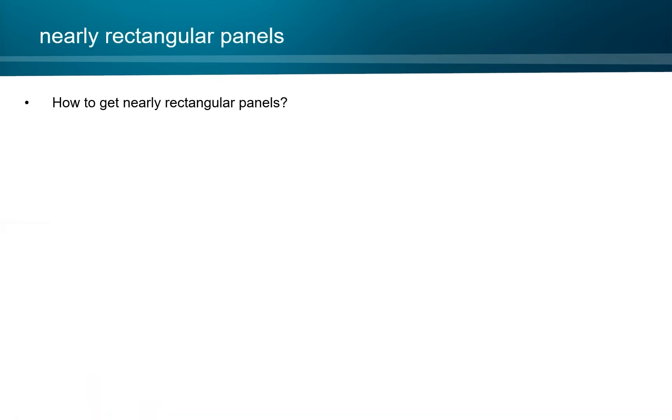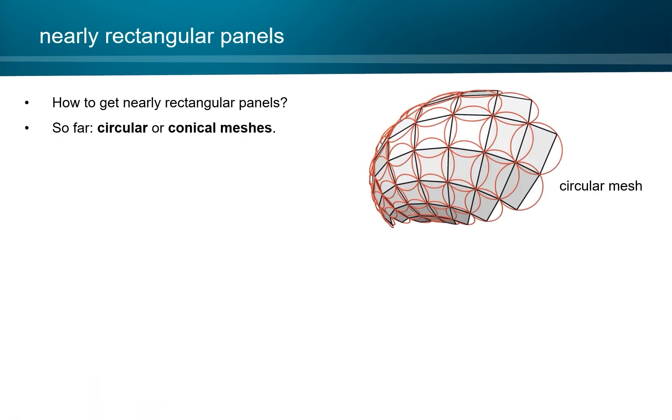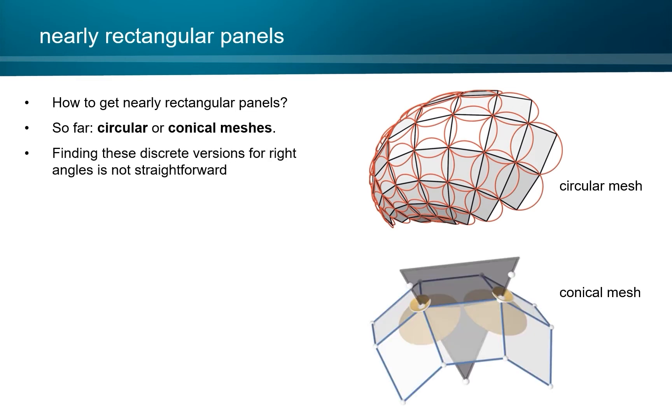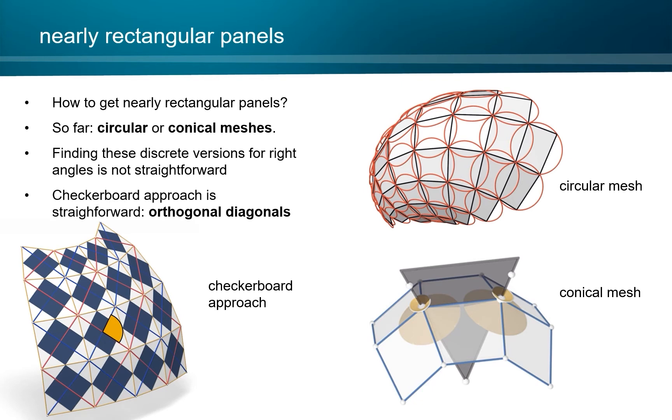How do we get nearly rectangular panels? Classically, there are two approaches: a circular mesh or a conical mesh. Finding these discrete versions for right angles is not straightforward. However, in the checkerboard approach, it is straightforward. We simply go for orthogonal diagonals.